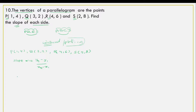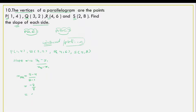We find the slope of PQ. Using the formula with P as (x1, y1) and Q as (x2, y2): y2 minus y1 is 2 minus 4, and x2 minus x1 is 3 minus 1. That is minus 2 divided by 2, which equals minus 1. So MPQ equals minus 1.